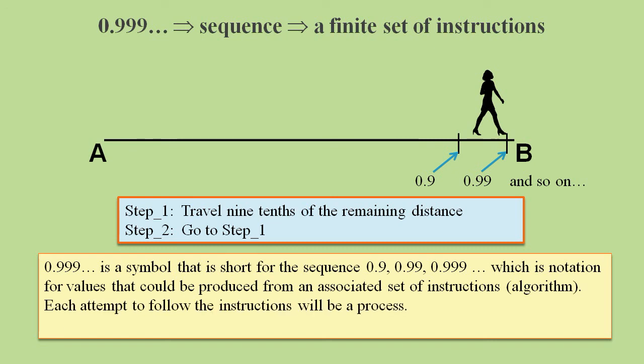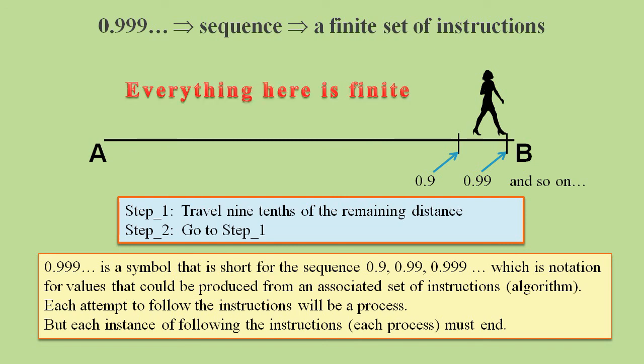Each attempt to follow the instructions will be a process. And each attempt to follow the instructions must come to an end at some point. So everything here is finite. So there's no infinite process here, just a finite set of instructions. This interpretation of 0.9 recurring is completely finite.